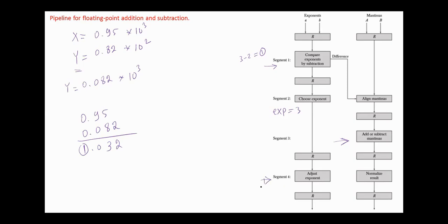So in this stage we need to normalize the result. This is done by shifting this value one position to the right and increasing the exponent by 1, and here is our final result.